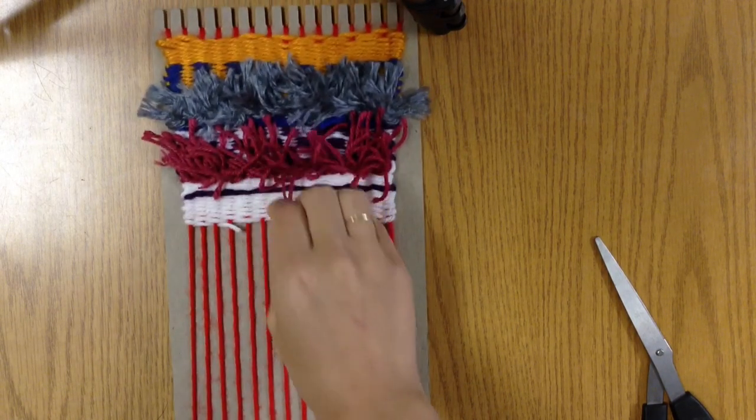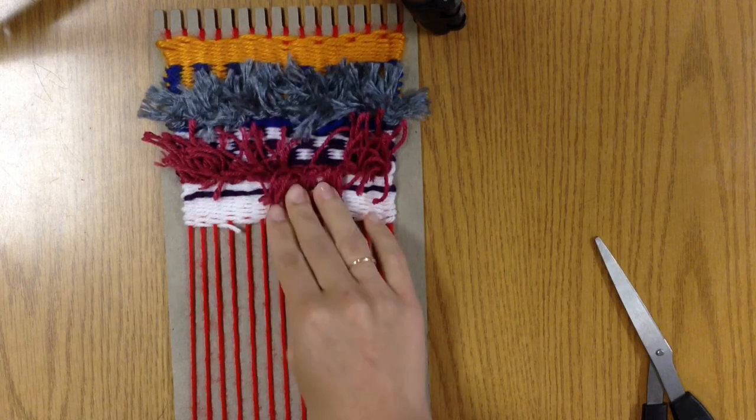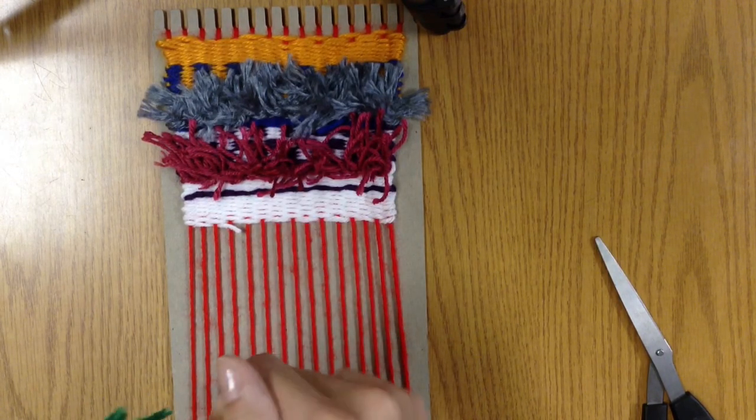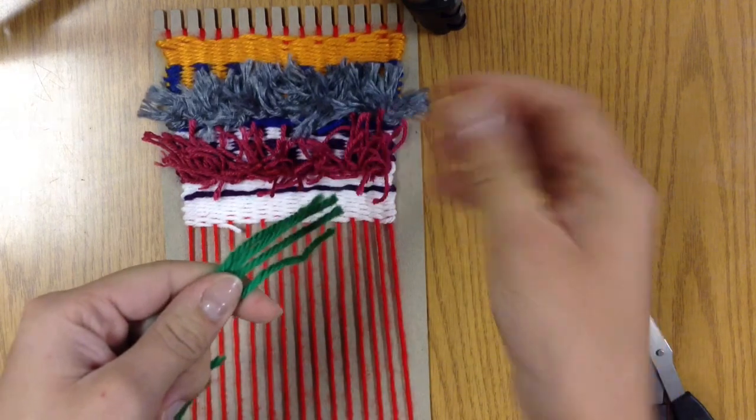Taking your weaving off of the loom is probably way easier than you think it is. The first thing I want to cover and make sure you know how to do is just how to tie the knots.